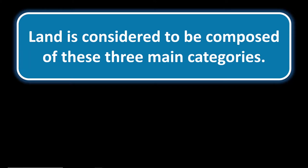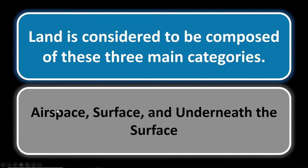Real property number four: land is considered to be composed of three main categories. We've talked about real property as land, anything affixed to it, and anything appurtenant to it. Land itself is composed of the airspace, the surface, and underneath the surface. Remember it's what you can reasonably use within the airspace and underneath the surface, and this includes mineral rights and the soil.